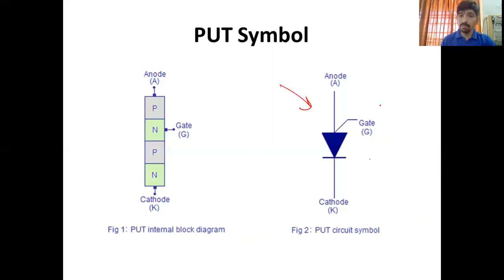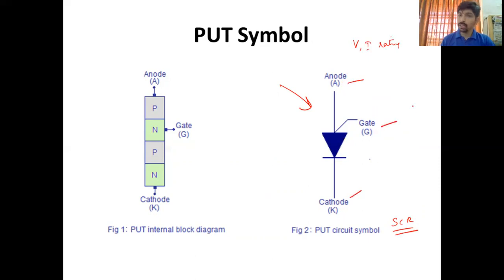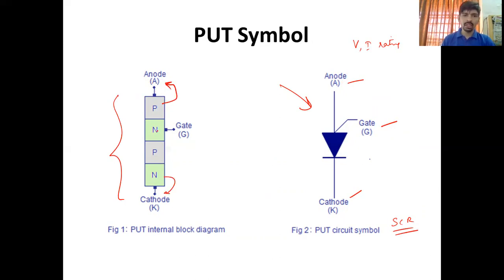This is the symbol of PUT — it is similar to the SCR. फर्क यह ही है कि इसकी voltage and current rating is very small। तीन terminals हैं — anode, cathode and gate। Same working है जैसे की normally SCR के होती है। यह इसका four-layered construction device है, जिसमें P को anode के साथ, N layer को cathode के साथ, और N layer को gate के साथ connect किया गया है।